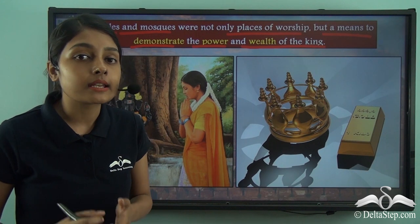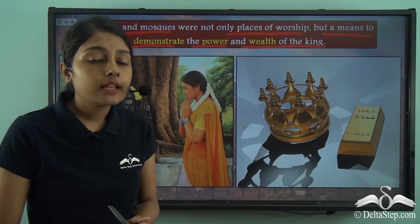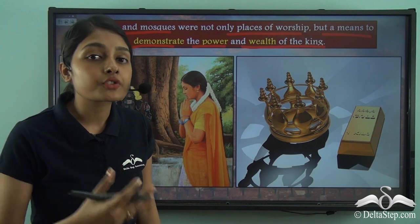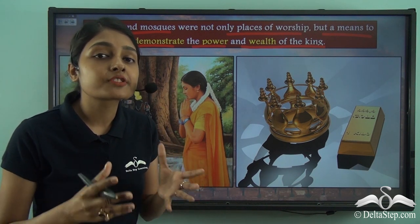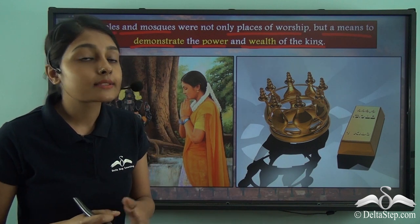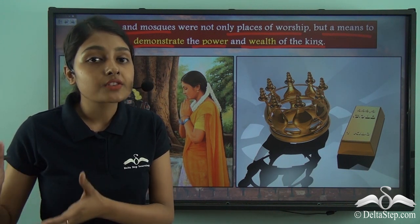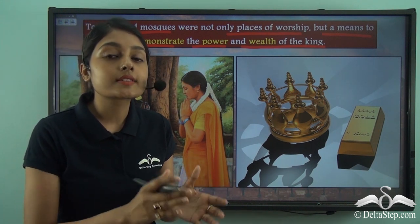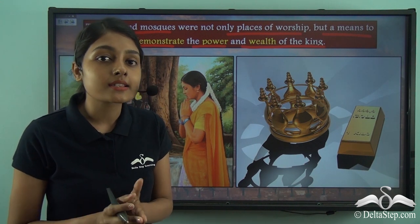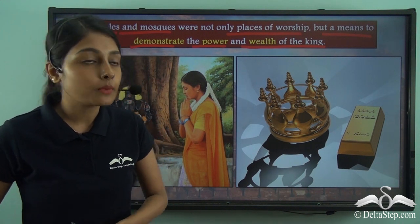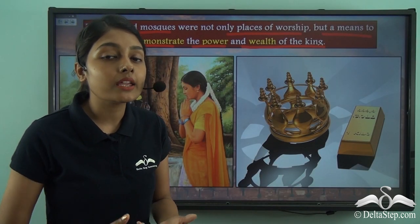These kings also made temples and mosques the embodiments of their power. When a king ruled an area, he would try to portray and demonstrate his power by building these religious architectures. These religious architectures were stuffed with wealth — huge amounts of resources and wealth were stored in them. This wealth was in turn the wealth in possession of the kings and rulers. So temples and mosques simultaneously became important places of worship and embodiments of the power and wealth of the ruling king.